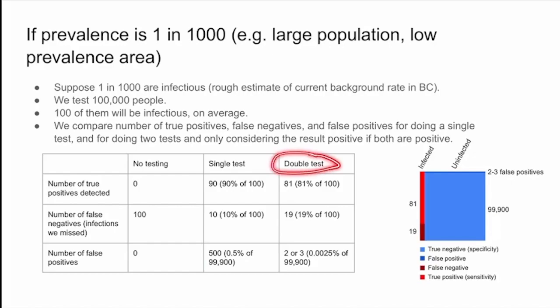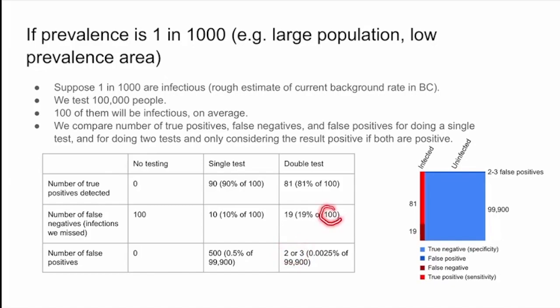When you do the double test, assuming the independence described before, you now only pick up 81 out of that 100, and you miss 19 cases — but you're now down to only two or three false positives, which compared to the actual number of positives is now pretty small.